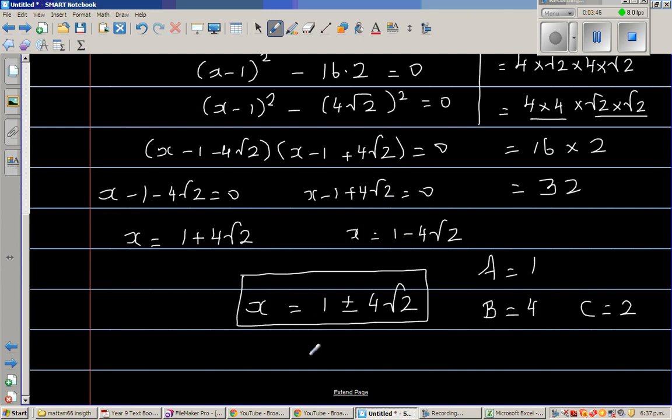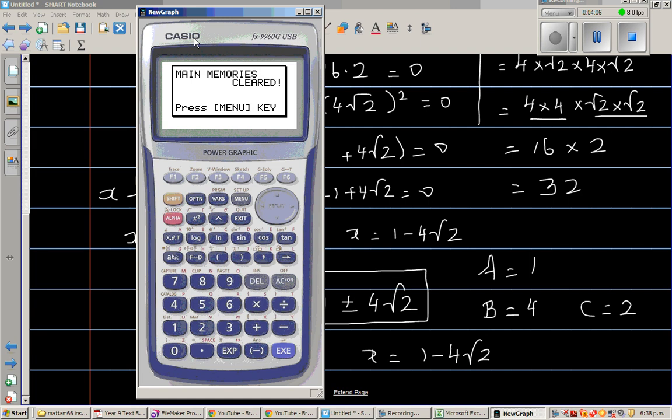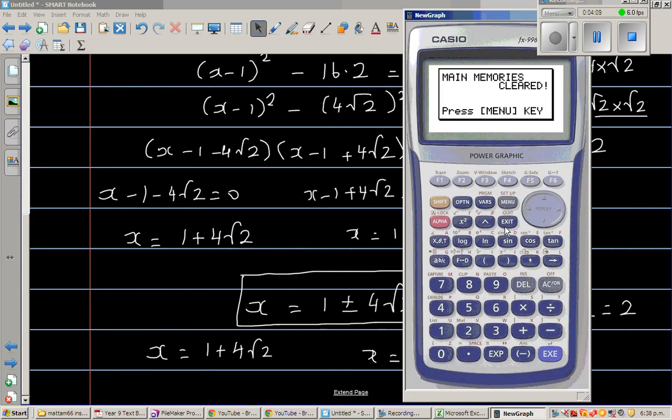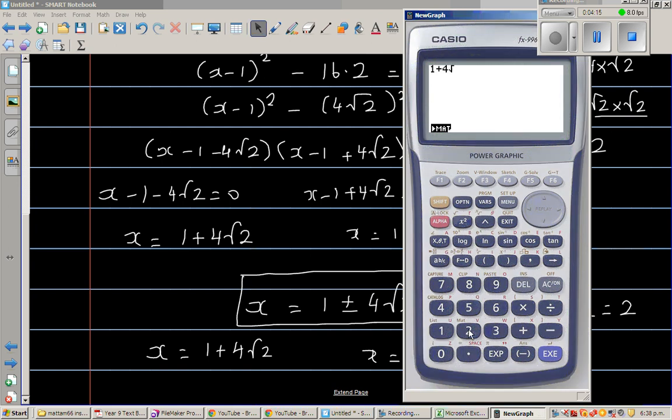So let us check this on a calculator. So if you want to write this as a decimal form, this is x is equal to 1 plus 4 root 2, or x is 1 minus 4 root 2. So let us use a calculator to check our answer. So 1 plus 4 root 2 is 6.65. Remember that. And 1 minus 4 root 2 is minus 4.65.